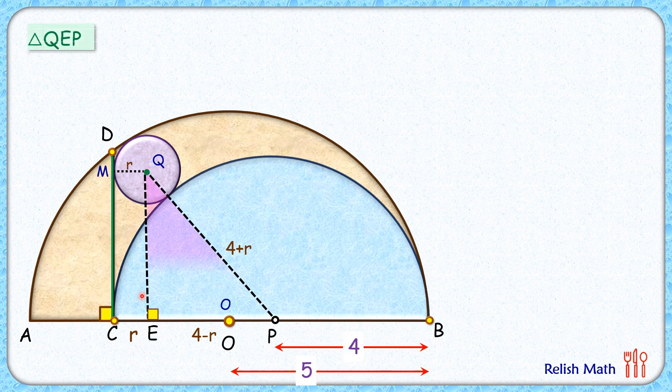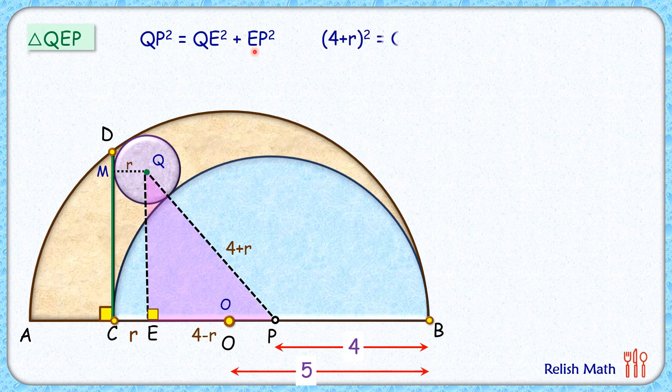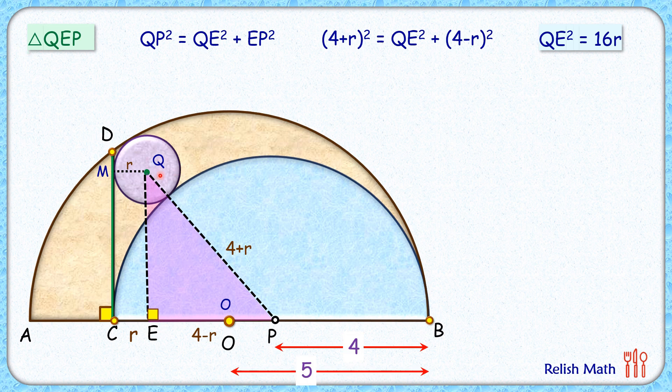In triangle QEP, applying Pythagoras theorem, we will get QE² plus EP² equals QP². Putting the values here, QP is 4 plus r and EP is 4 minus r. Solving it will get QE² as 16r, or QE length is 4√r.